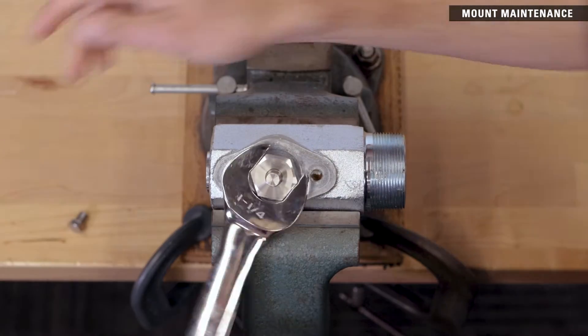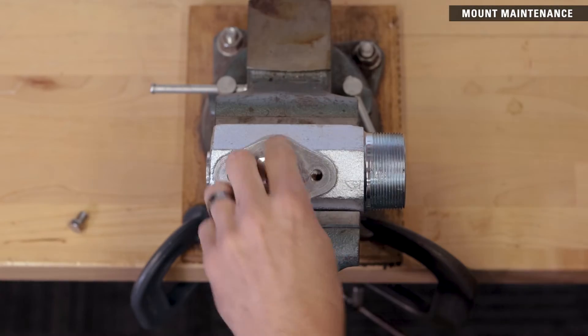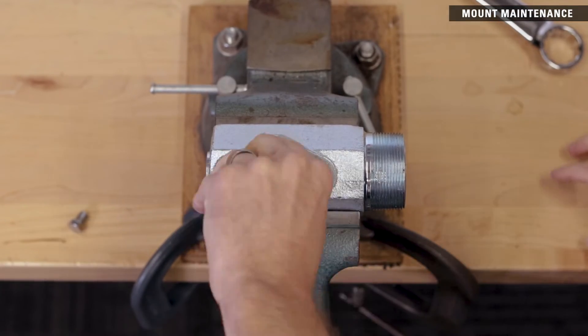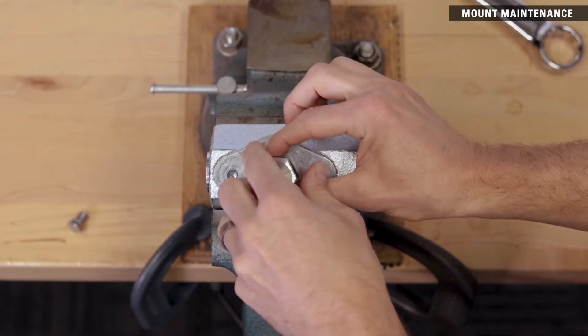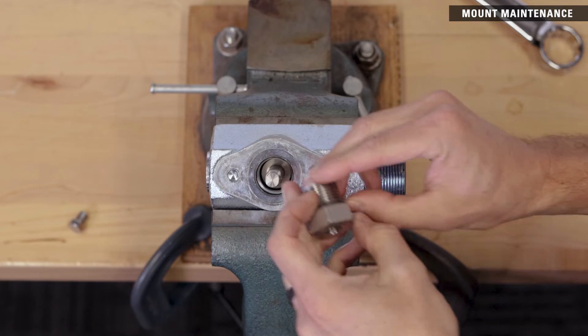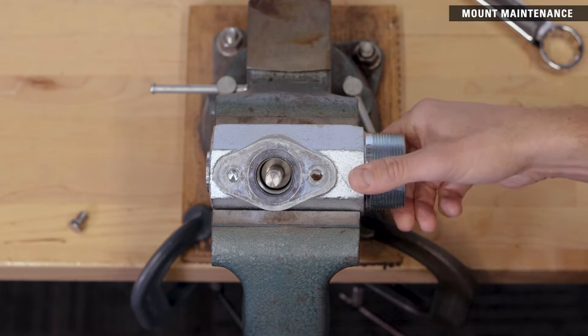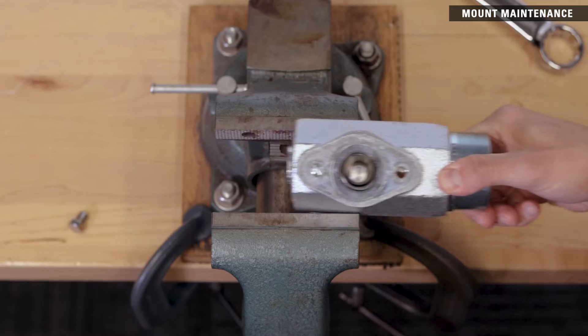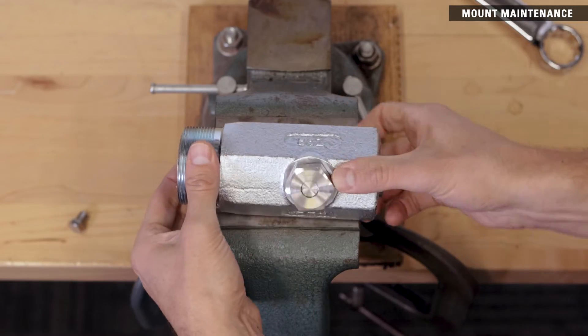Remove the first bearing hub with a 1-1-4 inch wrench. Flip the mount over in the vise and remove the second bearing hub and shaft.